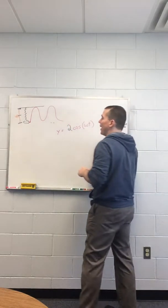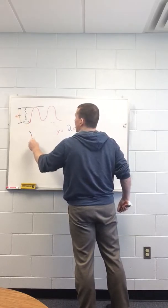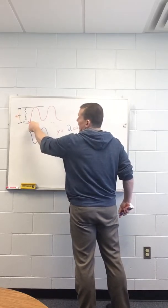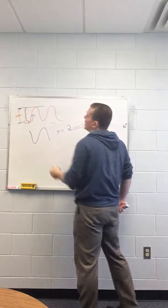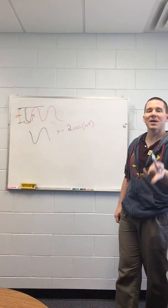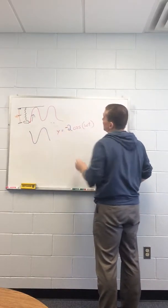But then again, a regular cosine wave starts at the top and goes down. This is starting at the bottom and going up, which means it's not a regular cosine wave. It's flipped. So it's a negative 2.